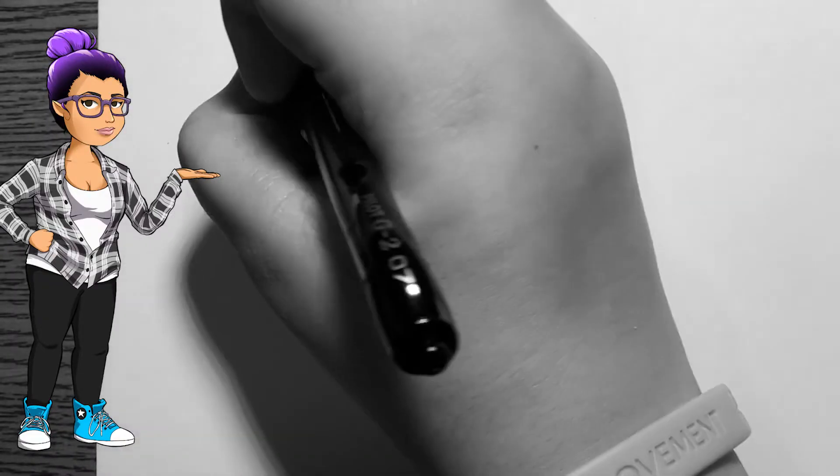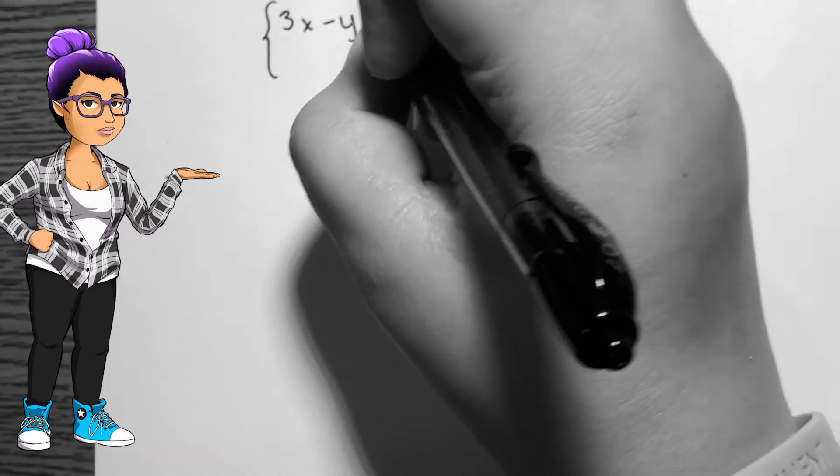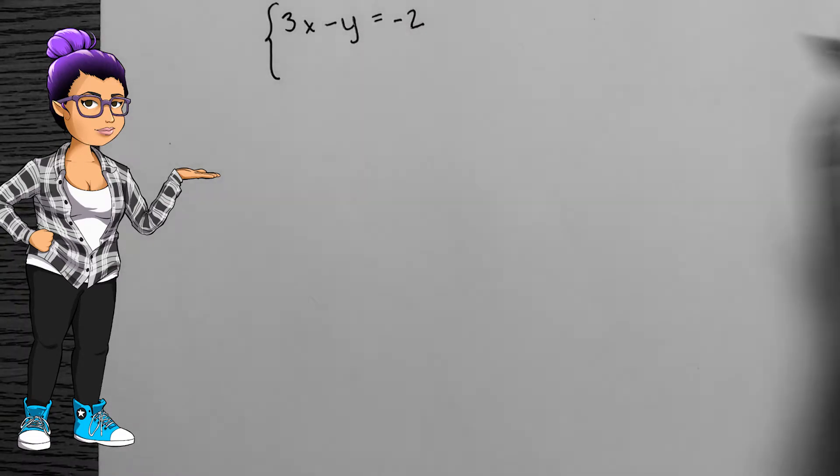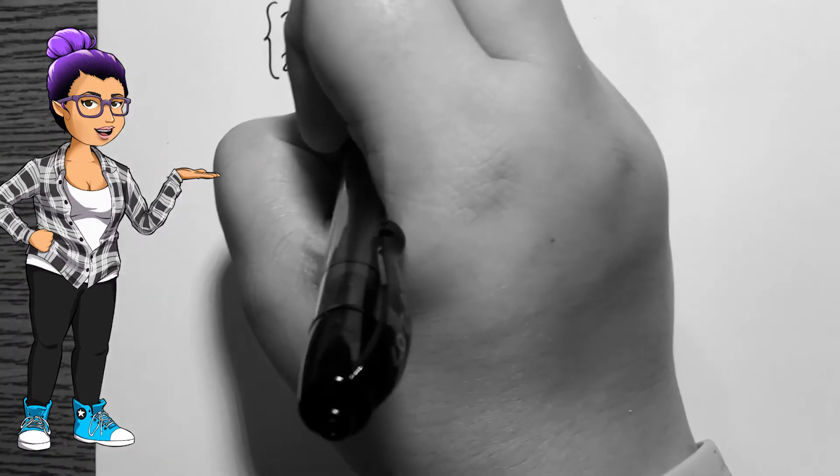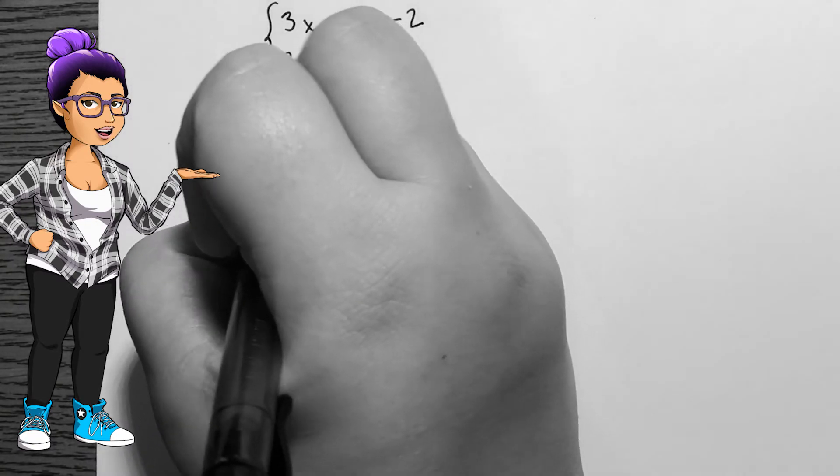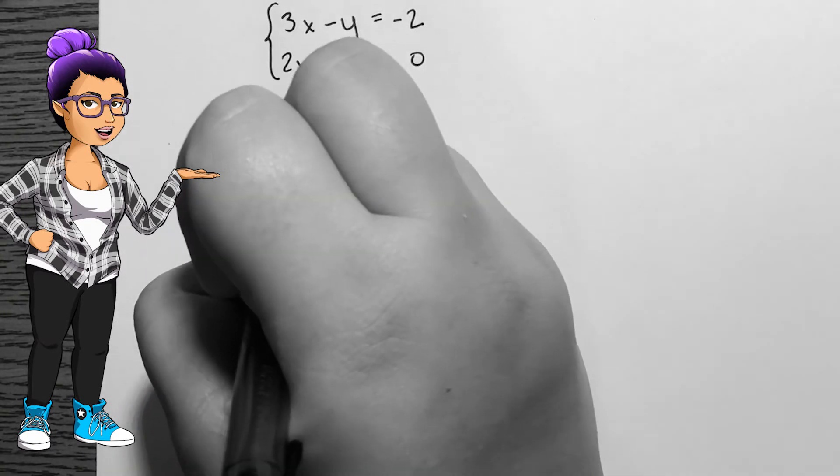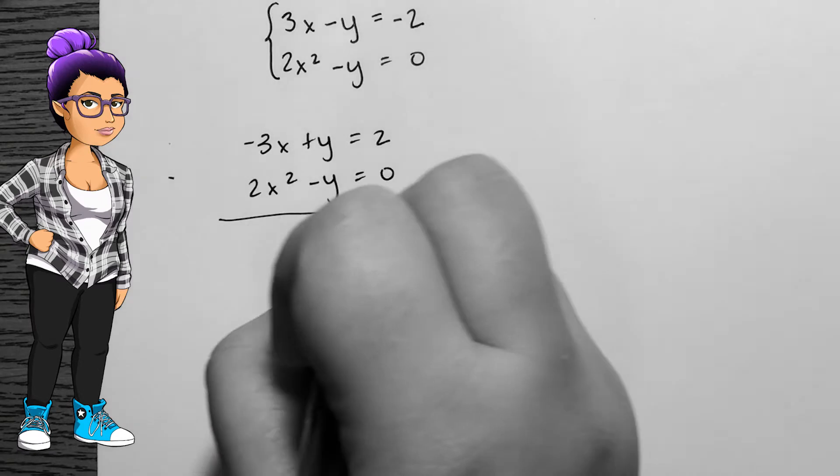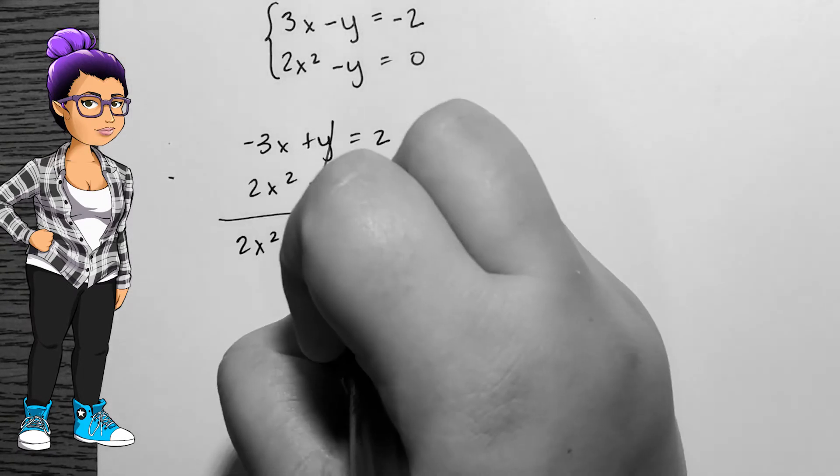Consider the system of equations 3x minus y equals negative 2 and 2x squared minus y equals 0. I can use substitution or elimination of the variable y to reduce the system into a single quadratic equation. I'll use elimination here by multiplying the top equation by negative 1.